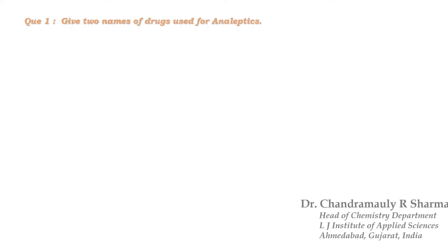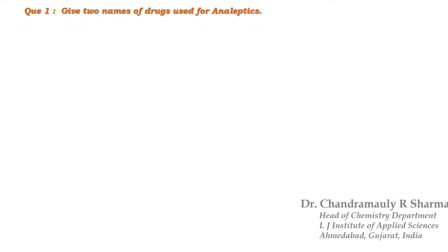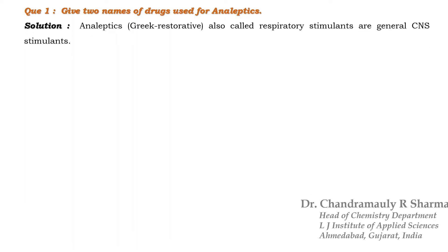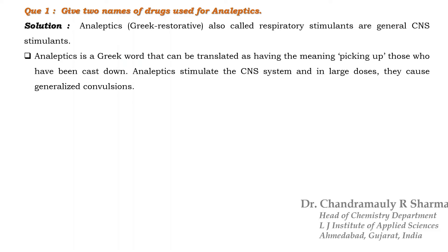The first question is just given on your screen: give two names of drugs used for analeptics. Before going to the answer, first we will discuss what is analeptics. Analeptics are called respiratory stimulants or general CNS stimulants. Analeptic is a Greek word that can be translated as having the meaning of picking up those who have been cast down.